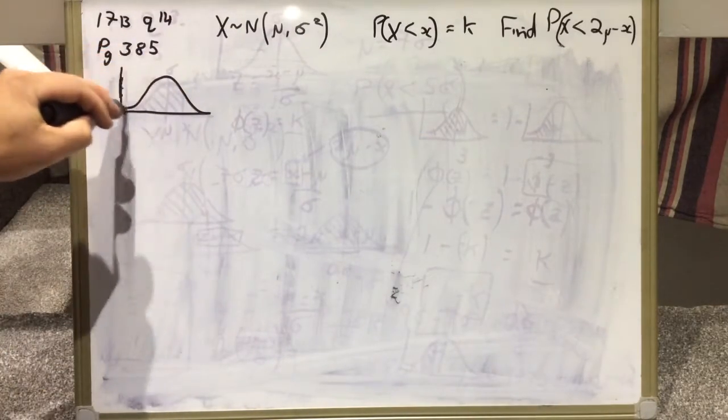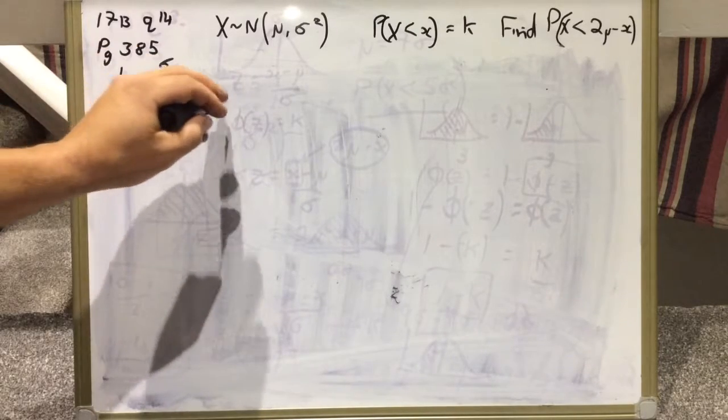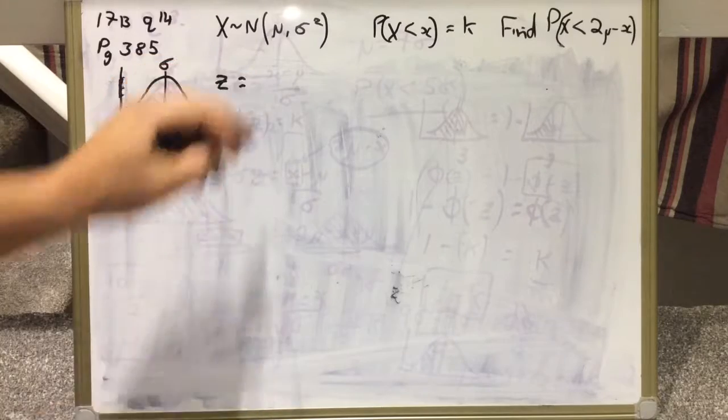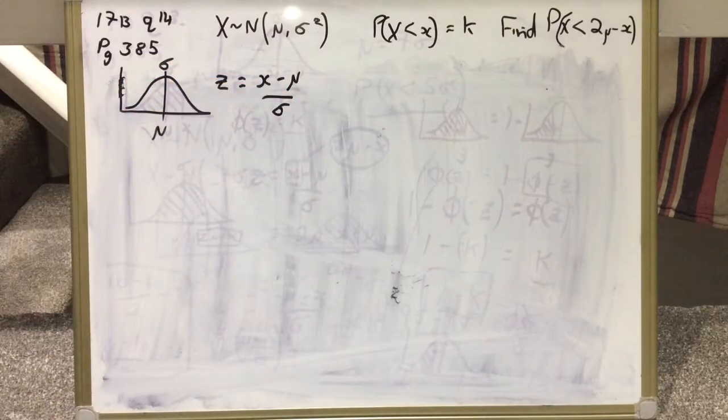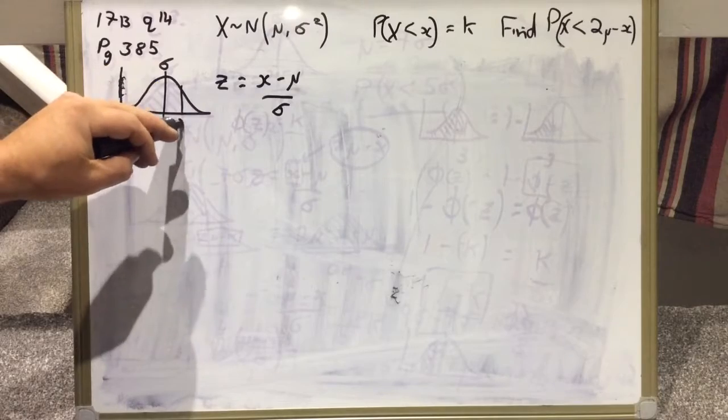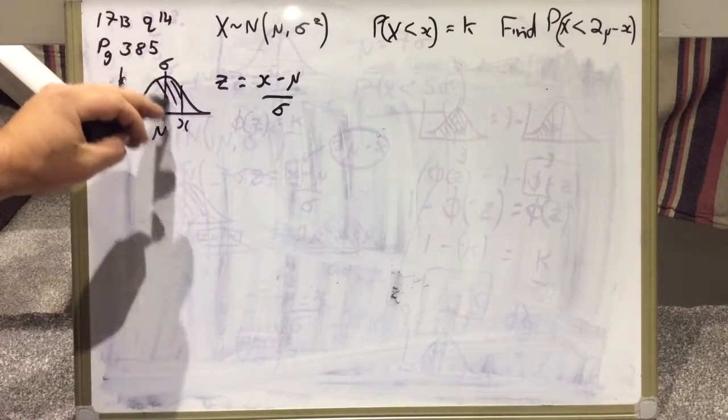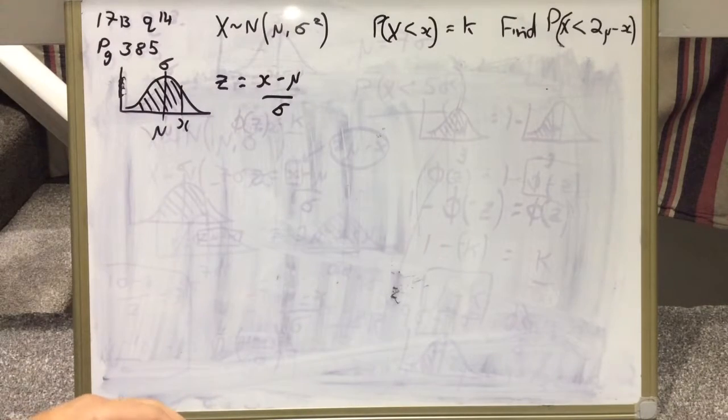We start off with our basic normal distribution with mu and sigma, and we start off standardizing. So Z equals X take mu on sigma, and we plug in our values. So our specific case, X naught is in fact X.